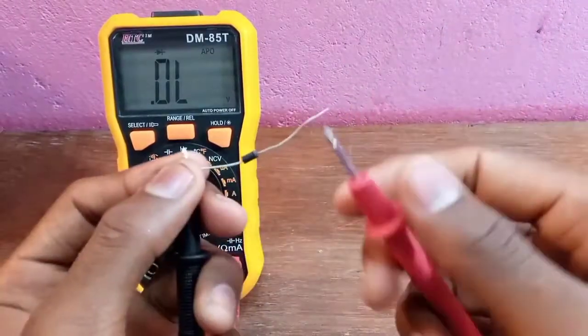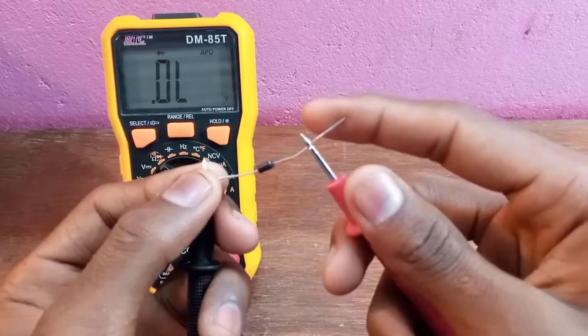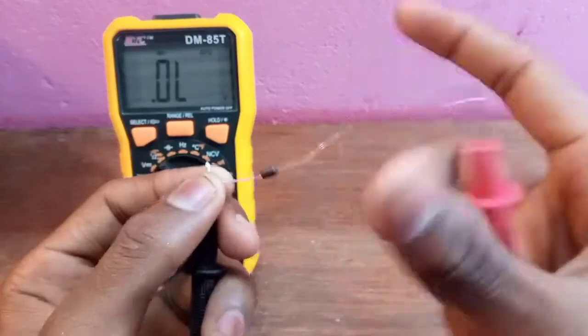We change the polarity of the diode. In this case, if the multimeter shows any number, the diode has been damaged.